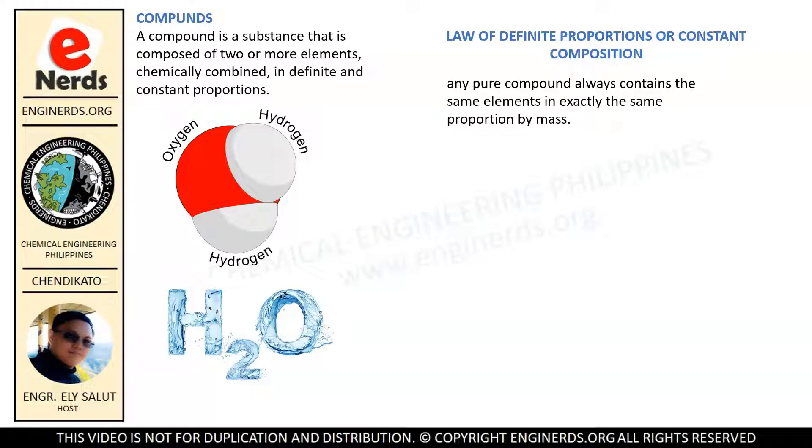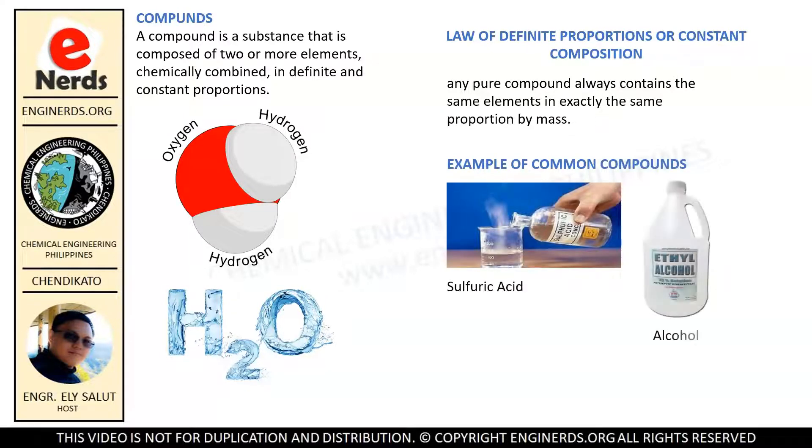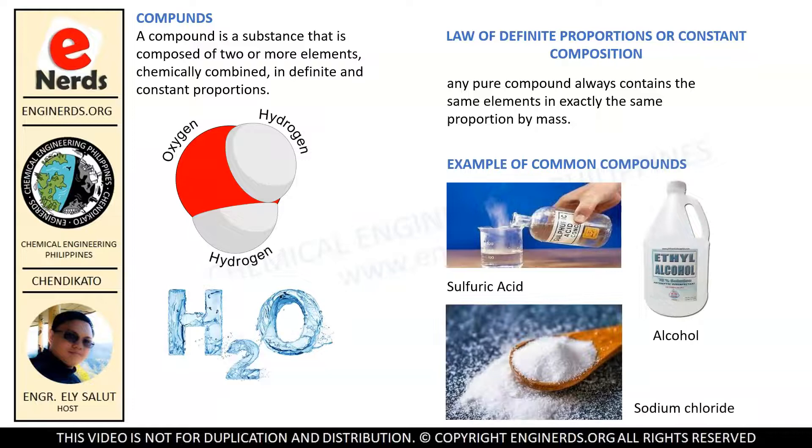A compound may consist of either molecules or ions. In either case, however, the formula of a compound gives the relative number of atoms in a formula unit. The formula unit can represent either a molecule or a group of ions. Here are some examples of common compounds: sulfuric acid, alcohol, sodium chloride, vinegar, and a lot more.